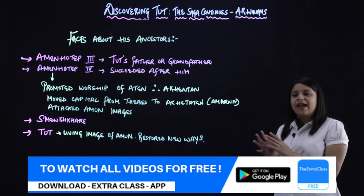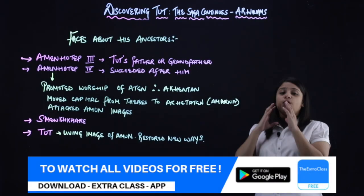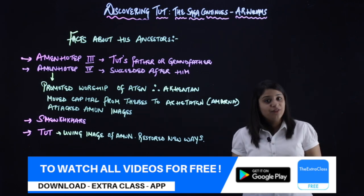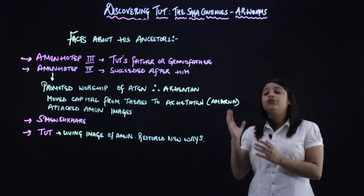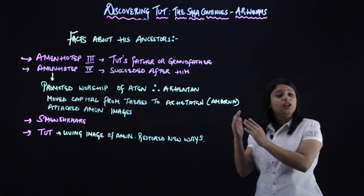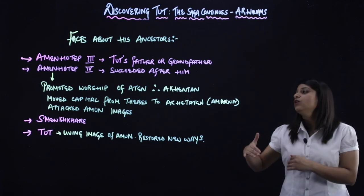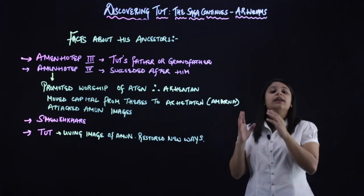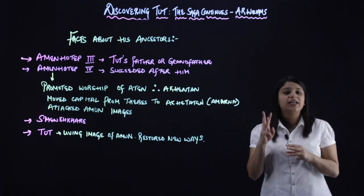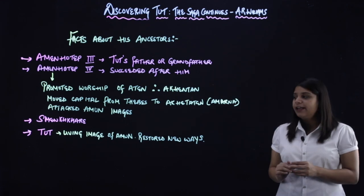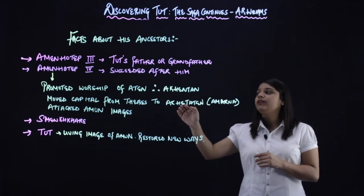So these are some facts about the ancestors of King Tut. So his father or grandfather's name was Amenhotep III, right, and then after him, his successor was Amenhotep IV. He did three major things that you need to remember. First is he promoted worship of Aten, and that is why in his name, what is added, Akhetaten, right. We had studied what is Aten, we had studied what is Amun.